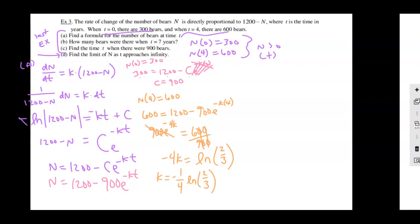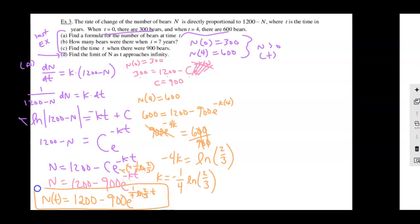Take the natural log: negative 4k equals ln(2/3). Divide by negative 4: k equals negative one fourth·ln(2/3). Plug that k back in. In the formula we have negative k, and since k is negative, those two negatives cancel. So N of T equals 1,200 minus 900·e^((one fourth)·ln(2/3)·T). That's the function modeling this population of bears — a lot of work to get to Part A.